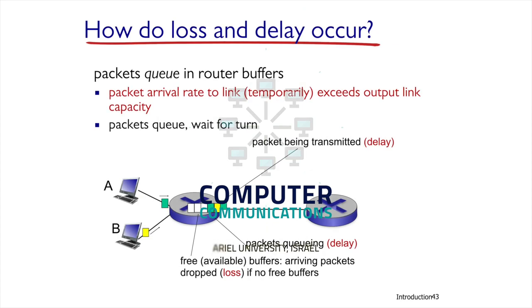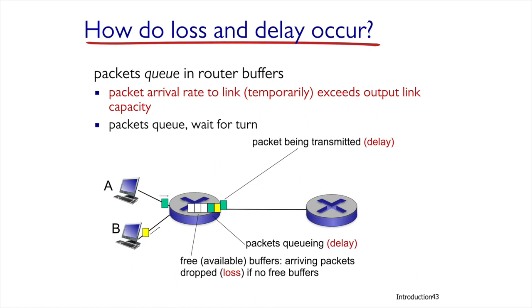In this unit, we'll learn about Router Queue Management. As we know, the router has a key role, which is routing the messages entering it to the right directions. We will learn the algorithm which the router employs to know which exit the information should be routed to further in the path. In this unit, we'll learn how accumulating packets in the router memory, and then deleting them after sending, is managed.